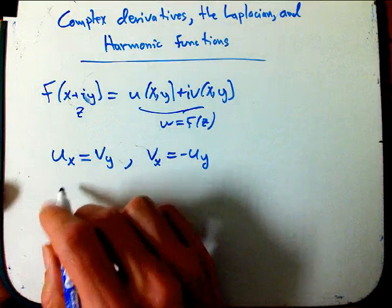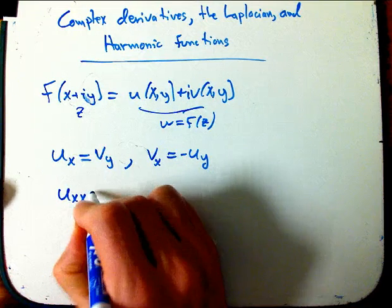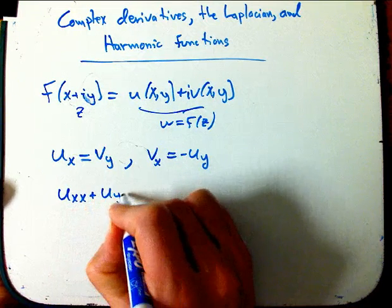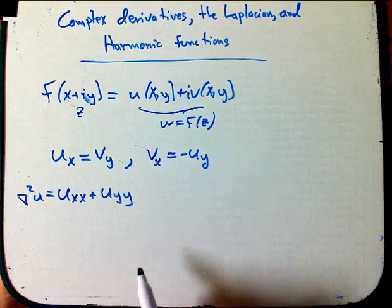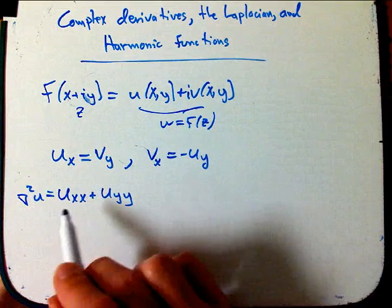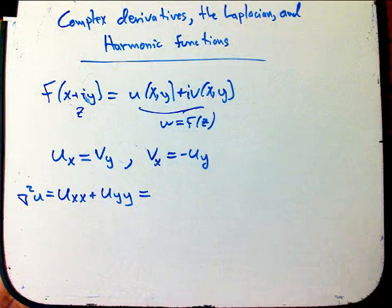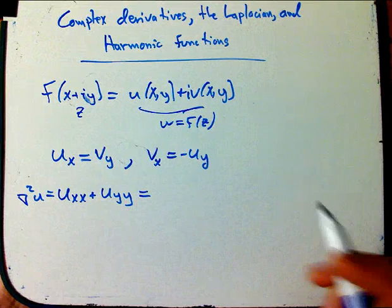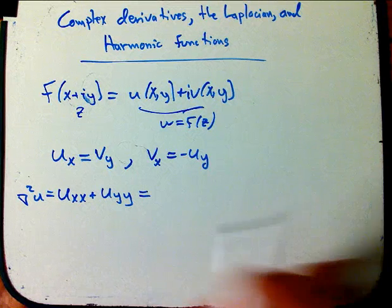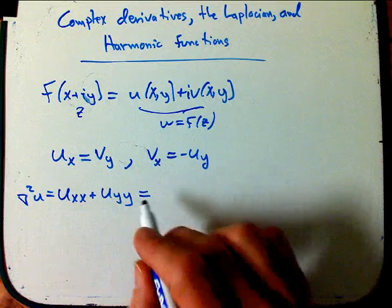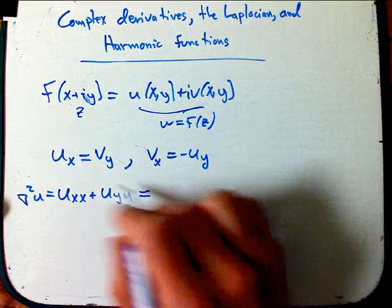One interesting thing is if I take the Laplacian of either of these functions. The Laplacian of u, by definition, is the sum of the two unmixed second partials. It has a lot of significance to electricity and magnetism, to heat flow — it's really the most important kind of derivative you can take in some sense. Let's see what happens when I substitute this in.